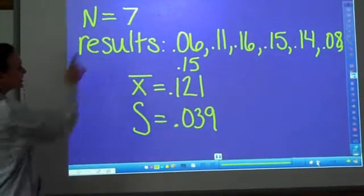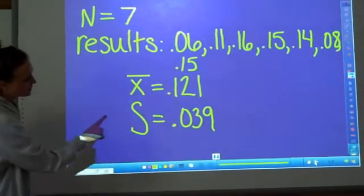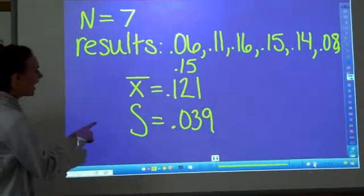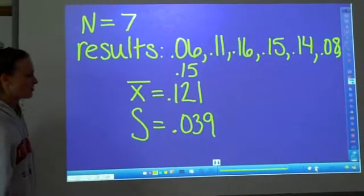N equals seven, your mean equals .121, your standard deviation is .039.